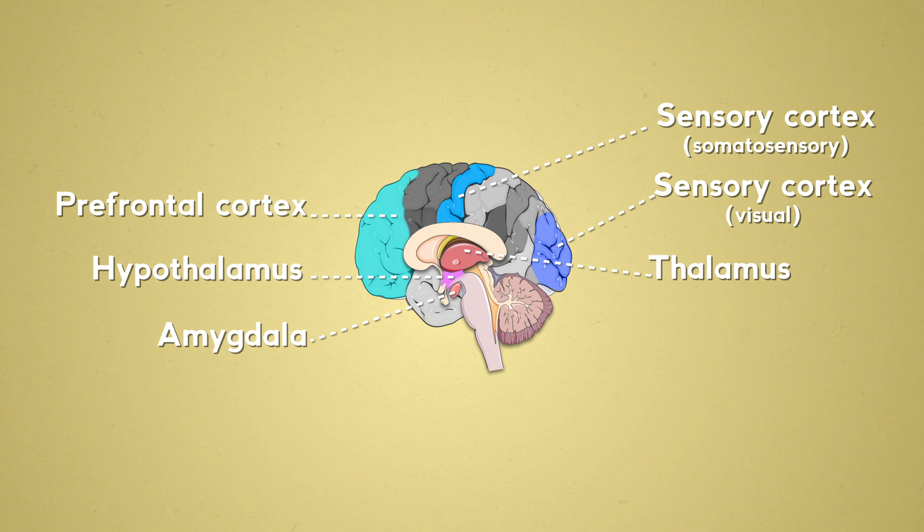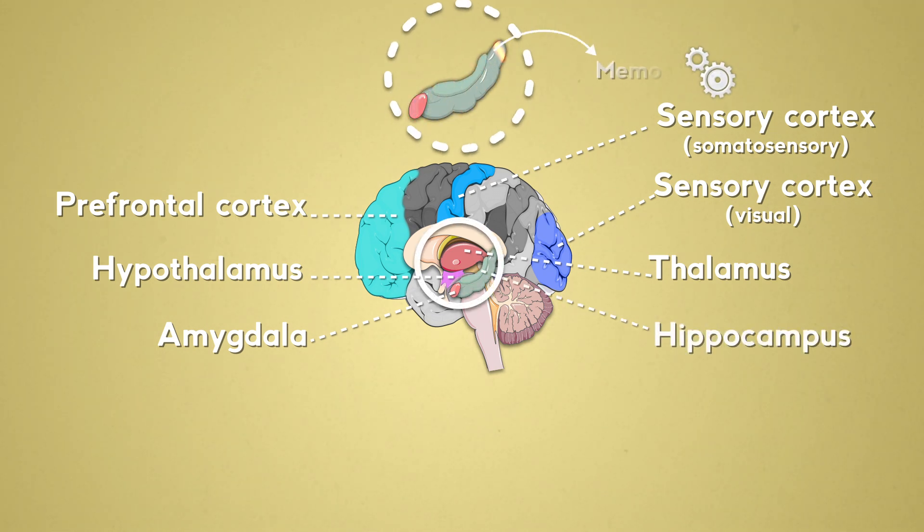The amygdala can also communicate with the hippocampus, the center of memory, to tell it that this is important information that should be stored. It is also in contact with the brain stem.